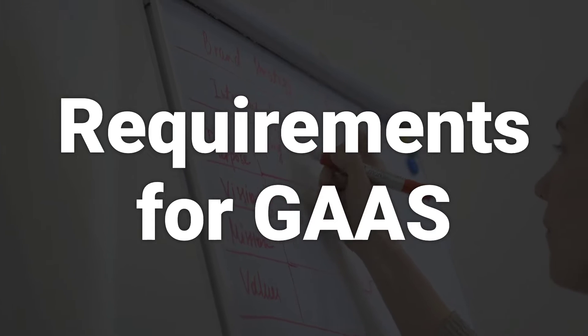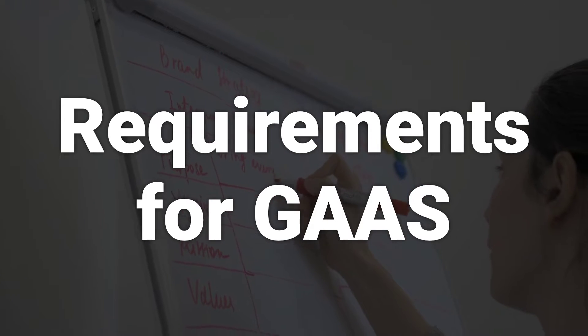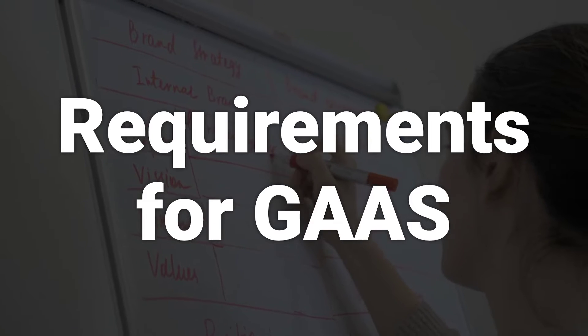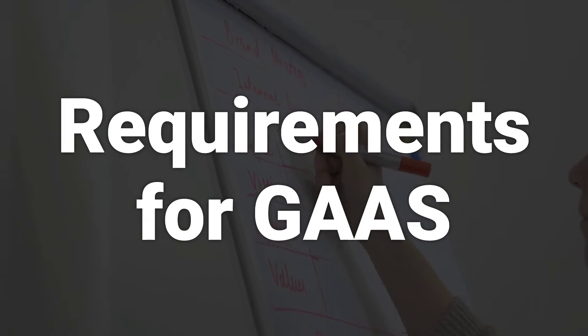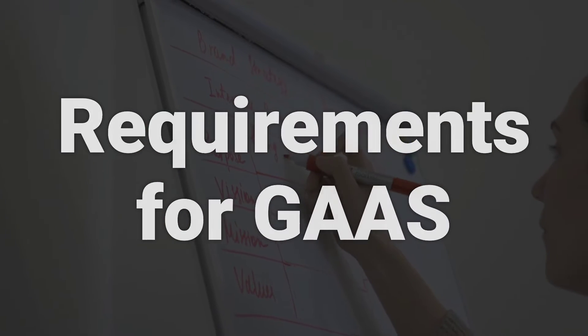Generally Accepted Auditing Standards comprise 10 standards, divided into the following three sections: General Standards, Standards of Field Work, and Standards of Reporting.